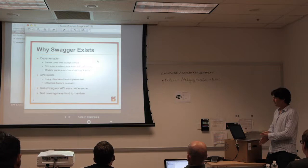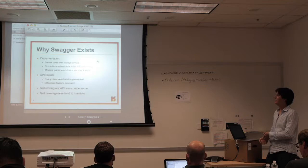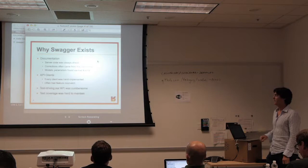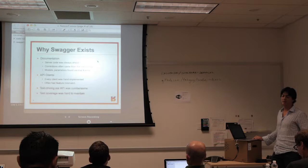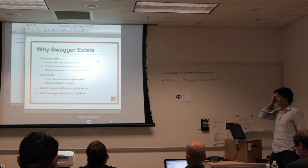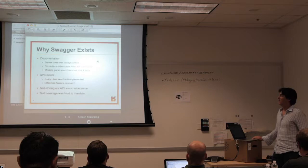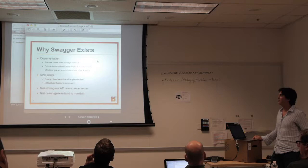Swagger solves the following problems: the server code is always ahead of the docs, the community was typically the ones correcting us, and people trying to understand what a REST API exposes typically do so via trial and error. You'd make a request, get a response, assume certain attributes in the JSON response were always going to be there — and then sometimes they aren't.